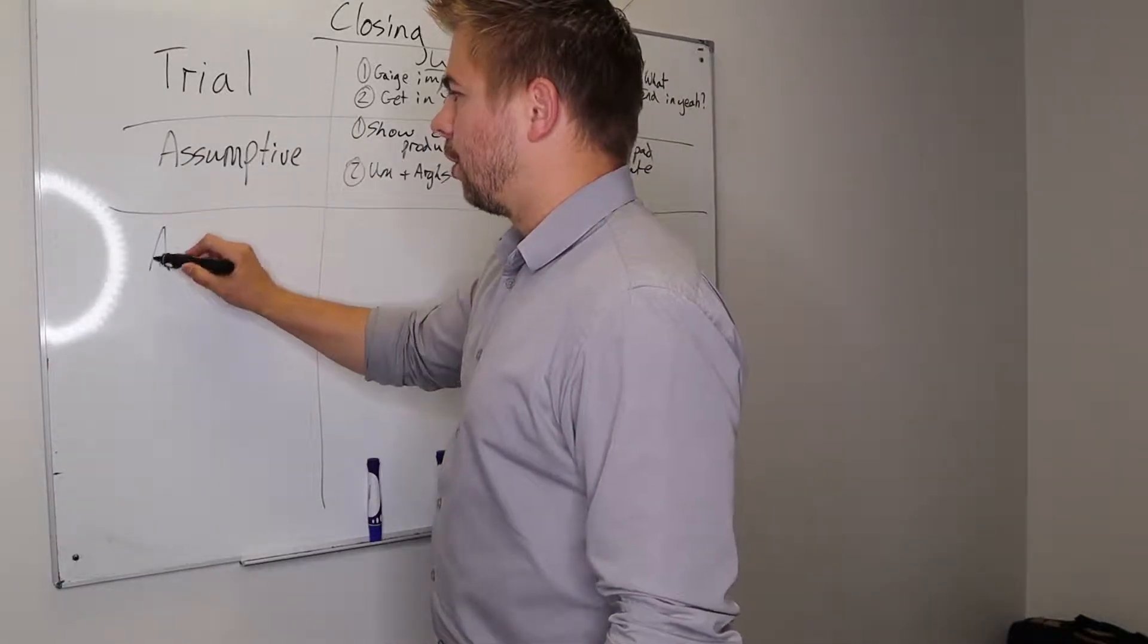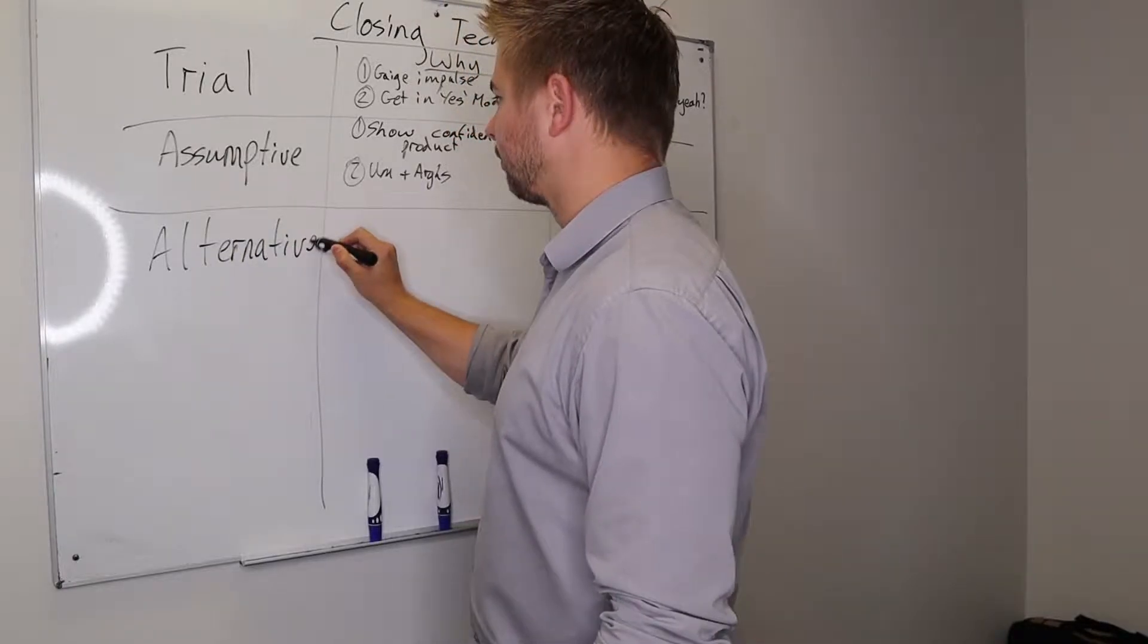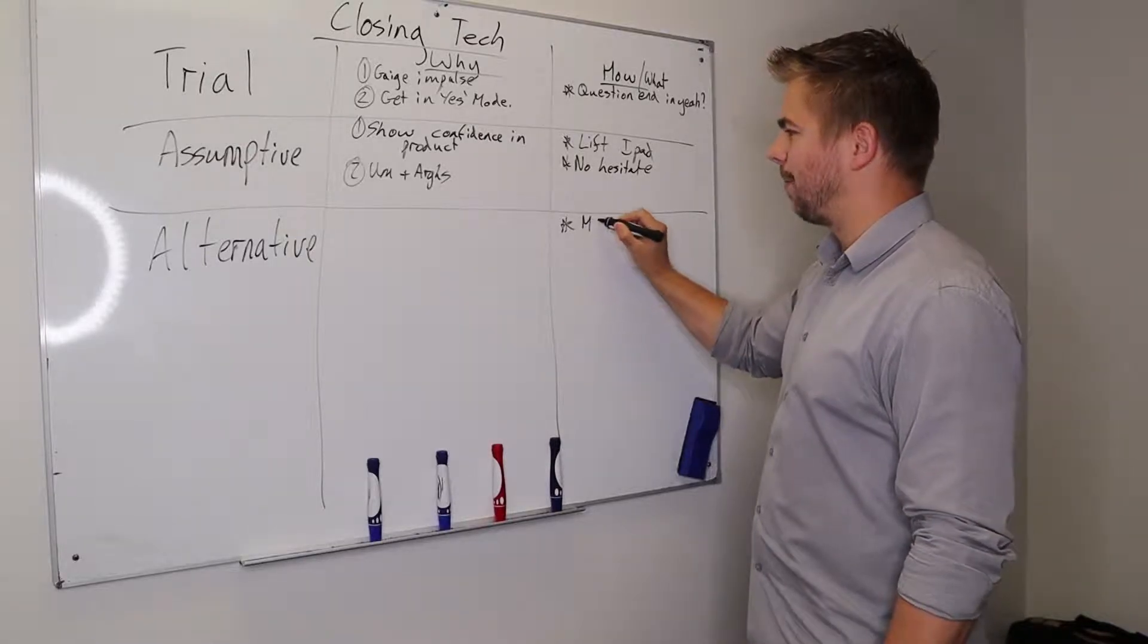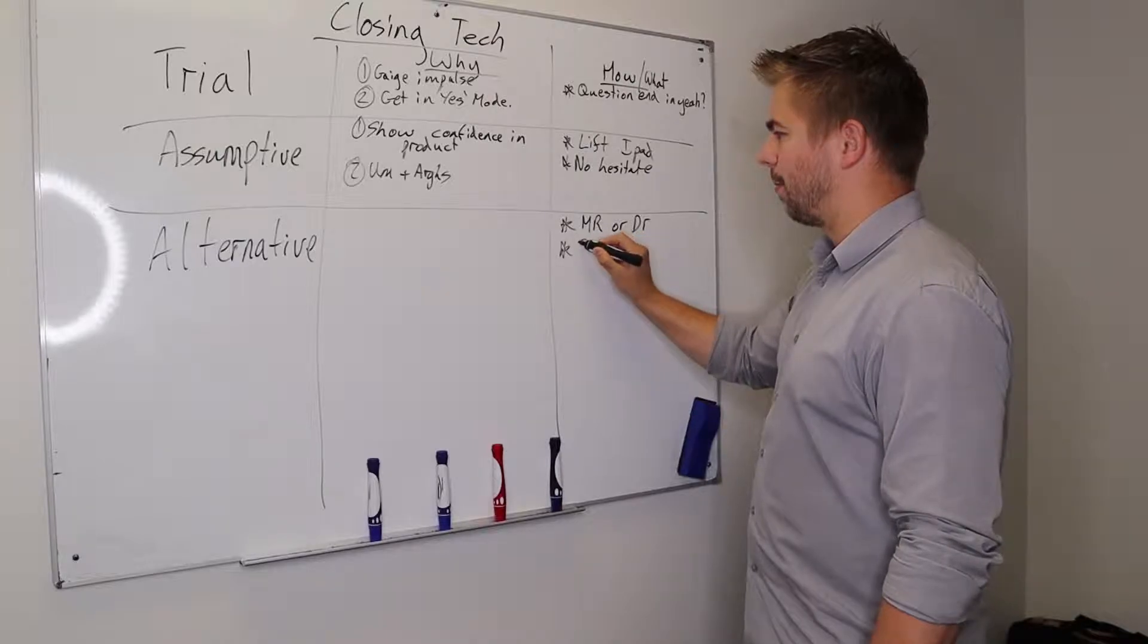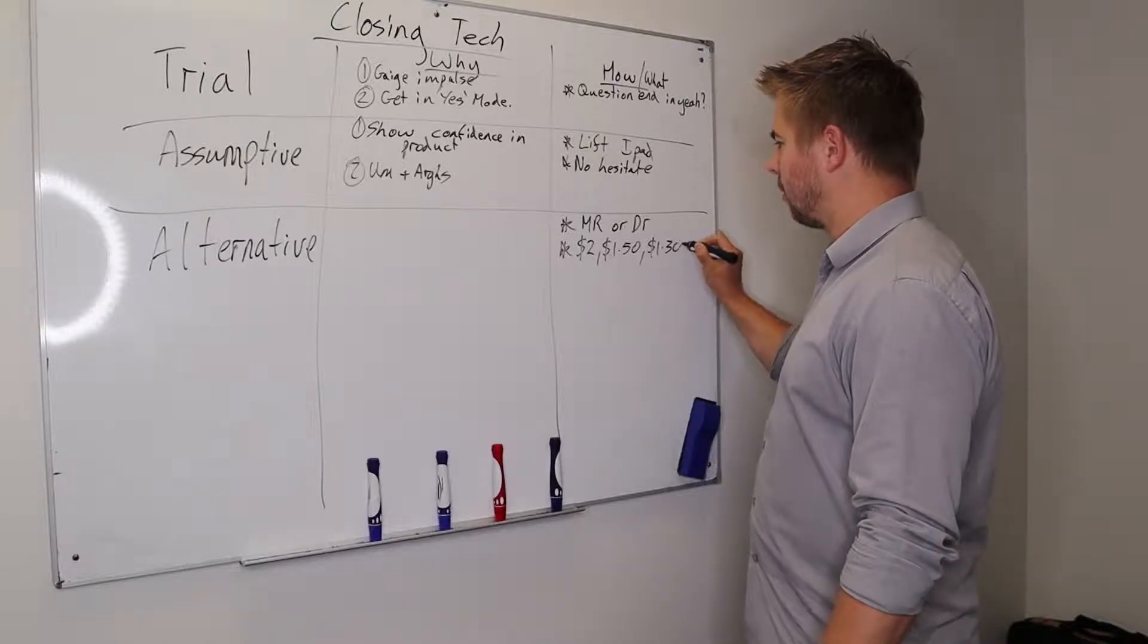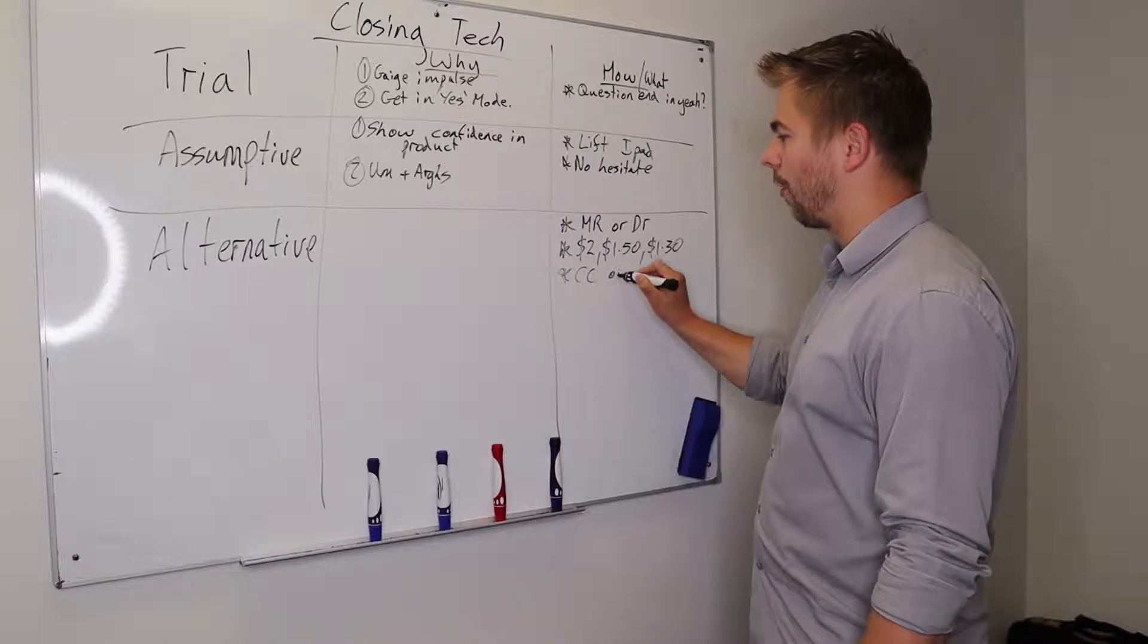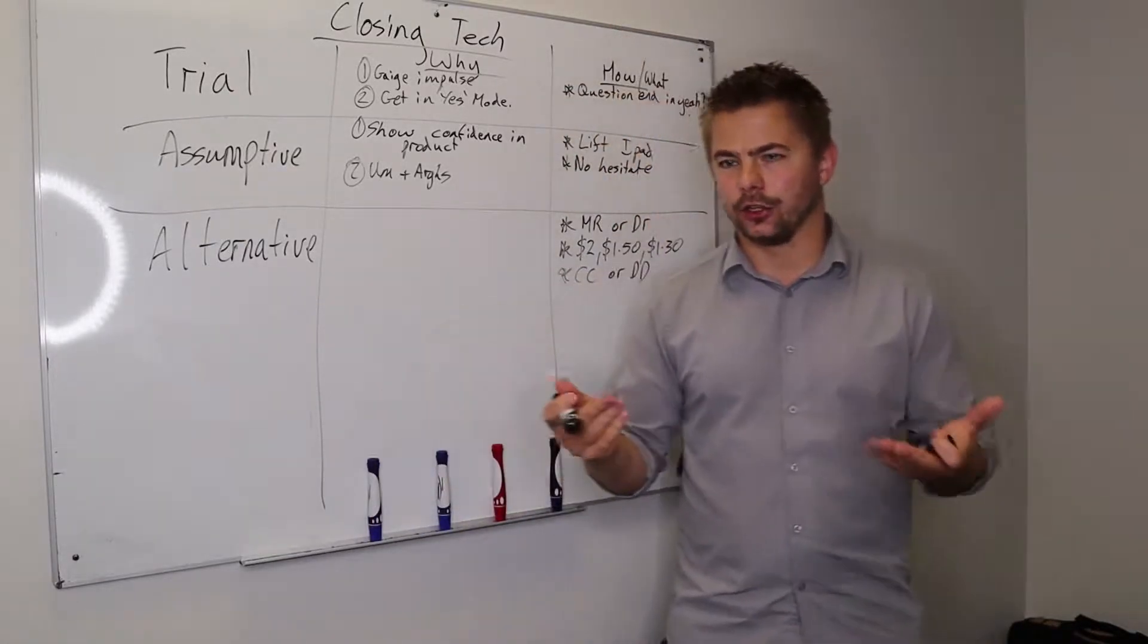Another close is an alternative close. So the alternative close, how you do it, it's any way that you do say, for example, Mr. or Doctor. You might say different amounts that they can donate. So $2 a day, $1.50 a day, $1.30 a day. You could maybe ask payments. Is it credit card or direct debit? So alternative is basically when you give them any type of alternatives they can choose from.